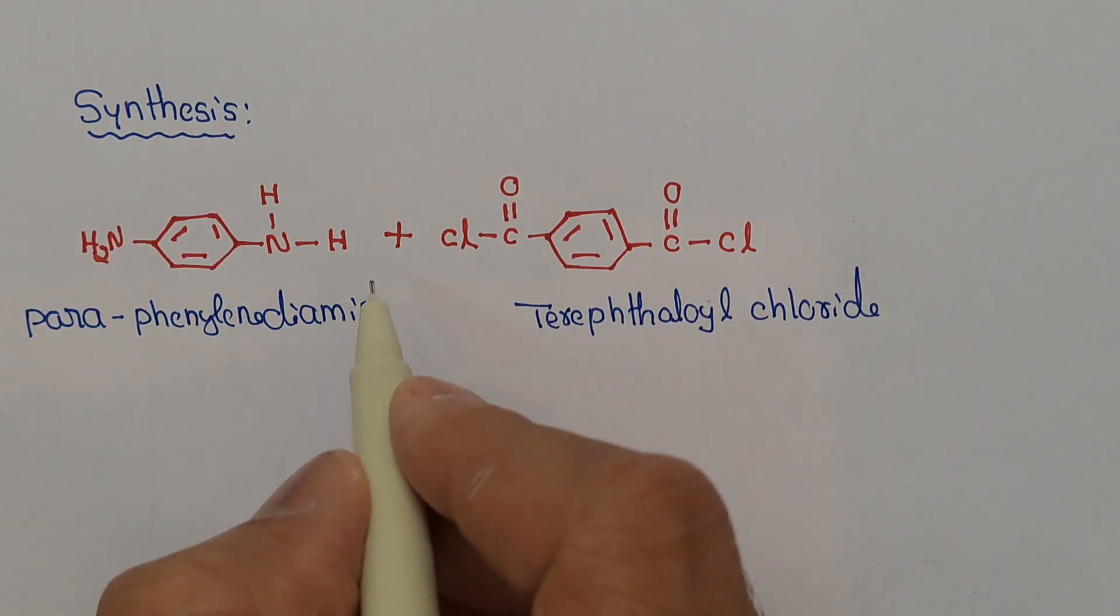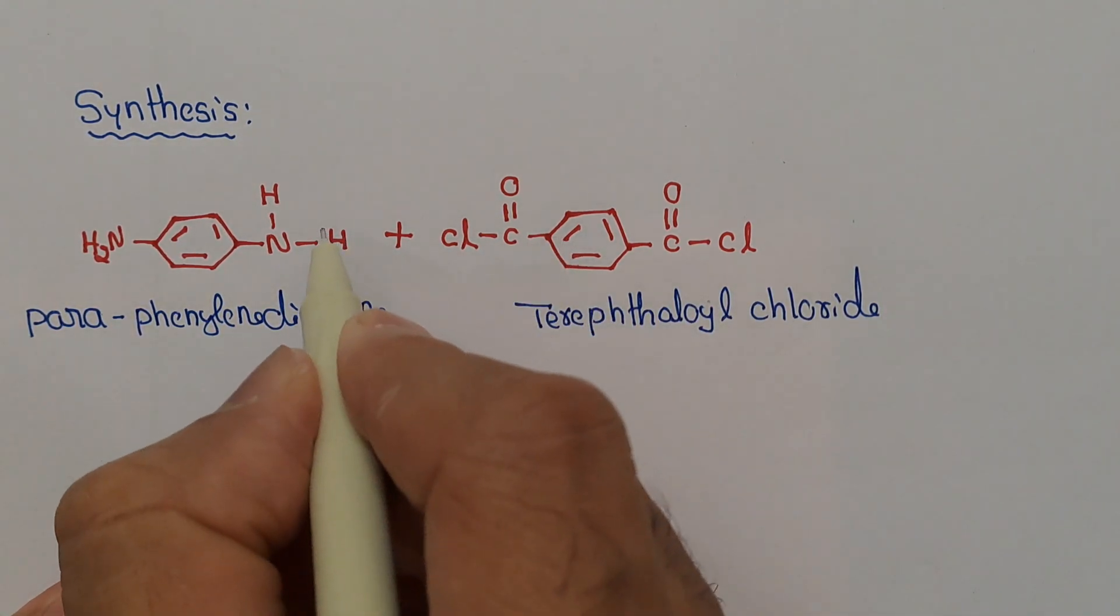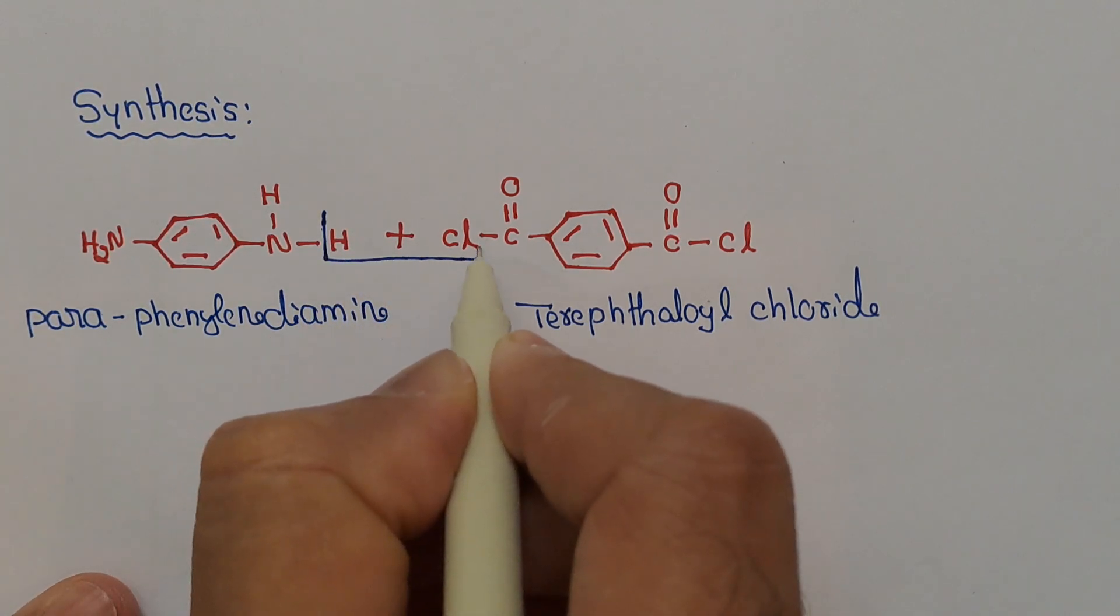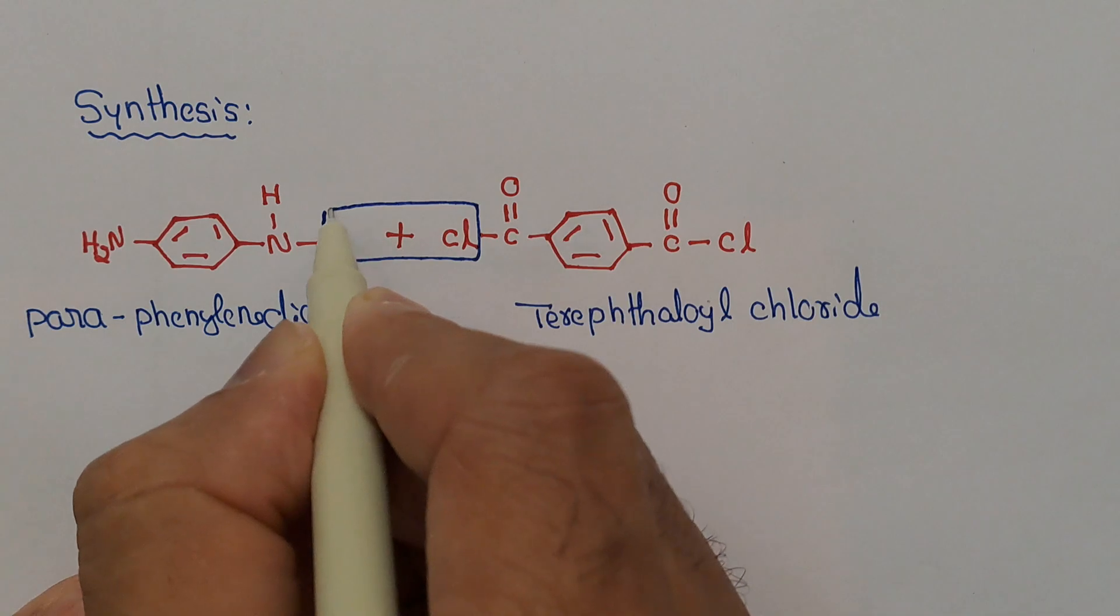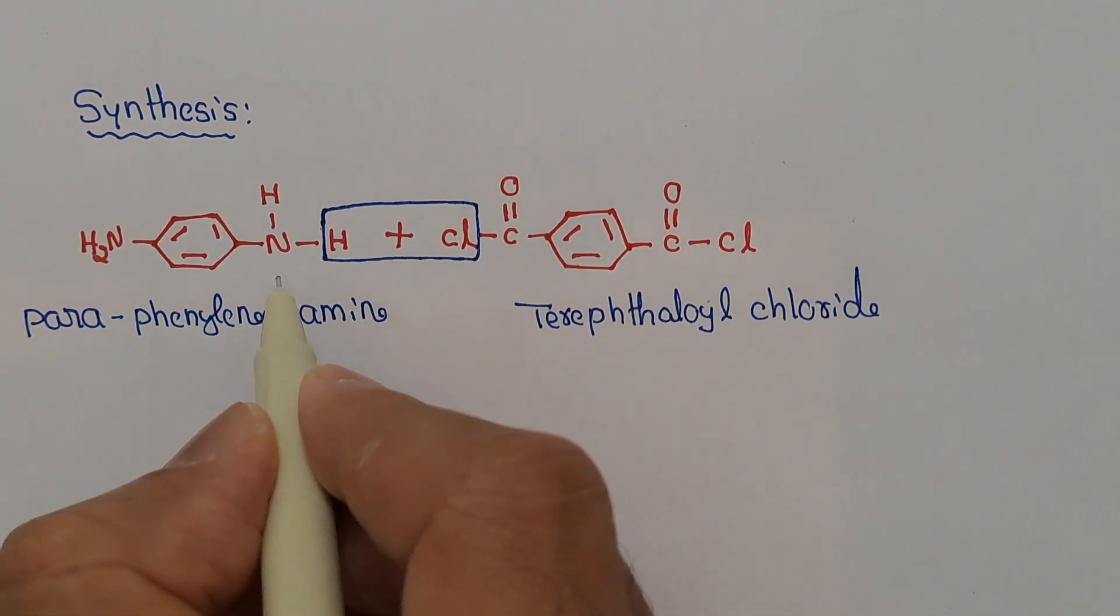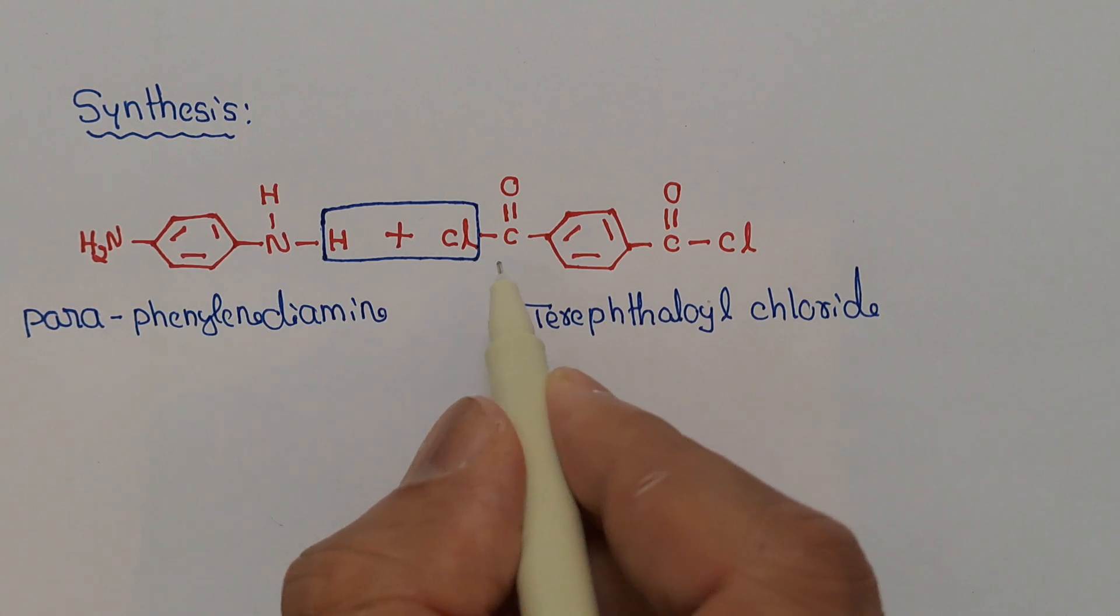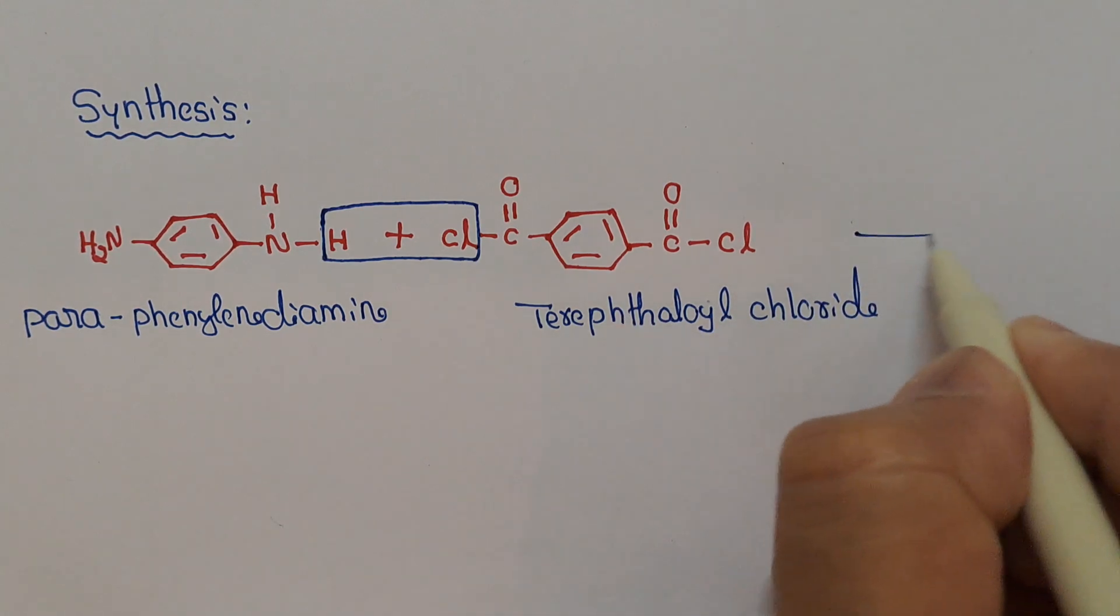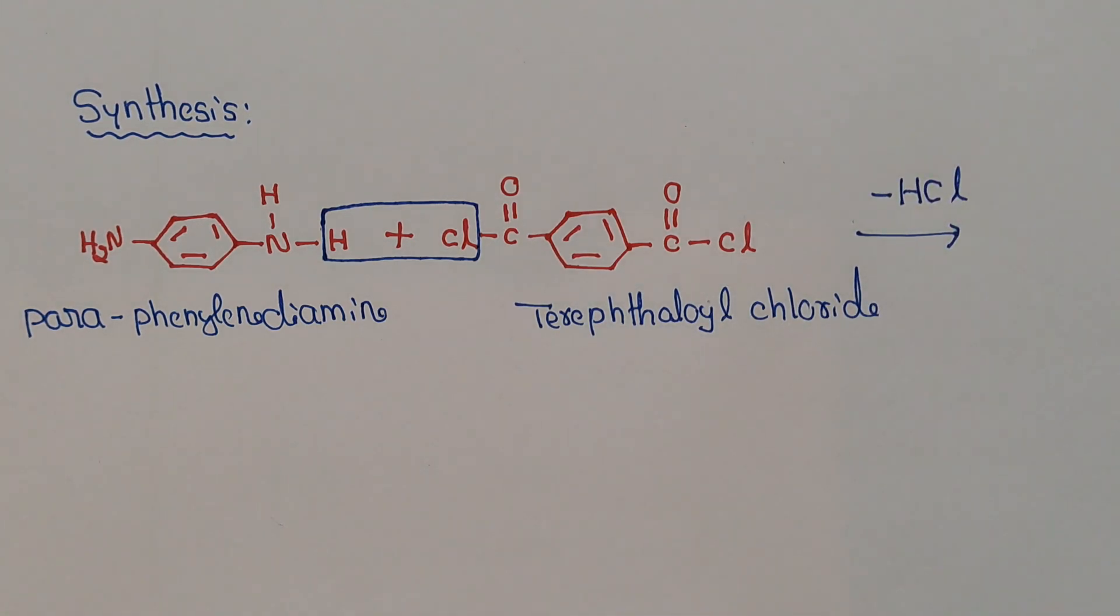Now during the condensation reaction, hydrochloric acid is eliminated like this. One hydrogen from this amine group and chlorine of this acyl group from the terephthalyl chloride. So here elimination of hydrochloric acid, HCl, takes place.